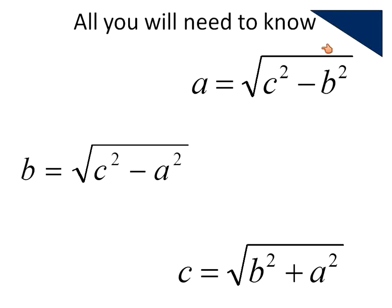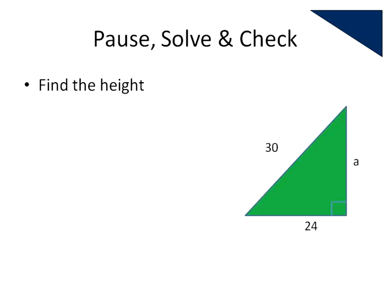So here again are our equations. If you're solving for the value of A, use this equation. If you're solving for the value of B, use that equation. And if you're solving for the value of C, use this equation. These are just different versions of the same equation: A squared plus B squared equals C squared. Now we're going to have a pause-solve-check session where you pause the recording, solve for the missing length on your own, and then check using the information I give you. So pause the recording right now, try and solve it, and then check your answers.